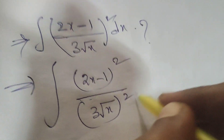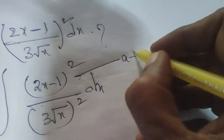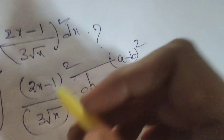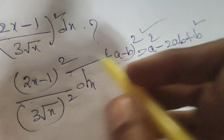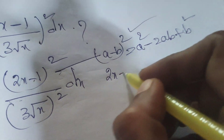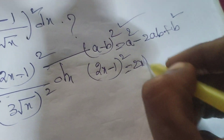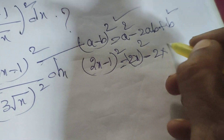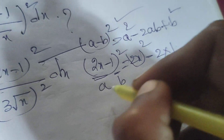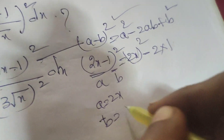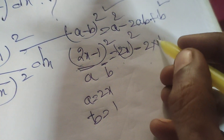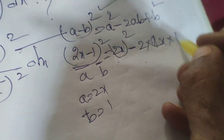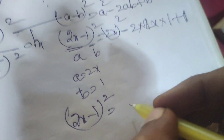First, expand the numerator (2x minus 1) whole square using the formula a minus b whole square equals a squared minus 2ab plus b squared. Here a means 2x and b means 1.